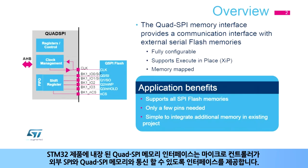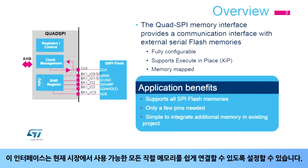The Quad SPI Memory Interface, integrated inside STM32 products, provides a communication interface allowing the microcontroller to communicate with external SPI and Quad SPI memories. This interface is fully configurable, allowing easy connection of any existing serial memories available today on the market.